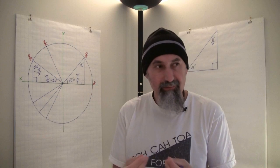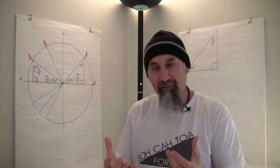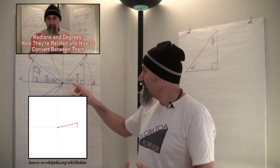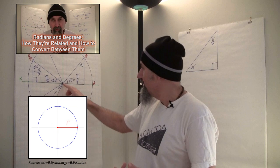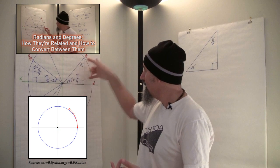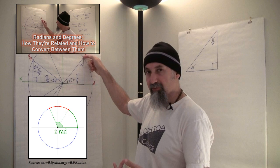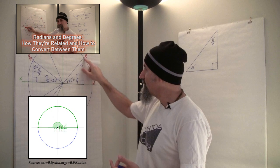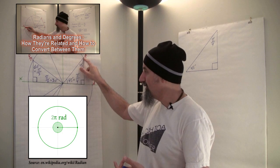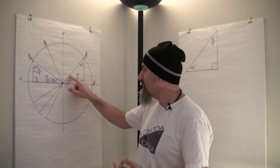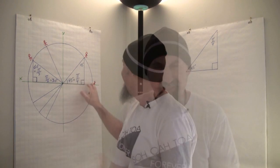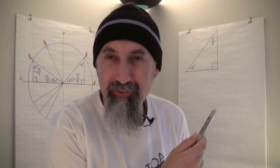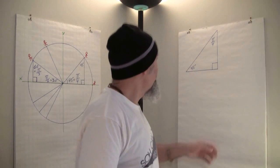The second time we simplified our system was introducing the concept of radians. Instead of working with degrees, we took the radius of the circle, superimposed it on the circumference, and said that if we travel the same distance along the circumference equivalent to the radius, we call that one radian. That was the second time we standardized something to make our calculations easy. This will be the third time.